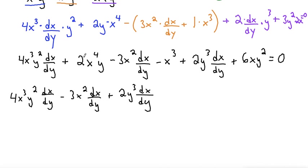And now we'll move all the terms without dx/dy to the other side. So equals—I'll put this term first because it'll be positive on the other side—so X cubed, and then minus 6XY squared, and then minus 2X to the fourth Y. And I think that's all the terms.